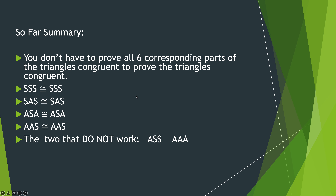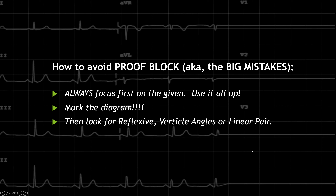Summary: You don't have to prove all six corresponding parts to prove triangles congruent. SSS, SAS, ASA, and AAS all work. The two that do not work are ASS and AAA. I promised I would simplify things, and now the next step is to avoid 'proof block' — and that is where we will start in the next video.